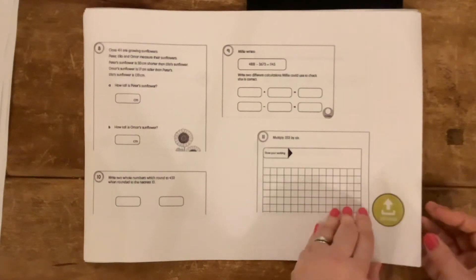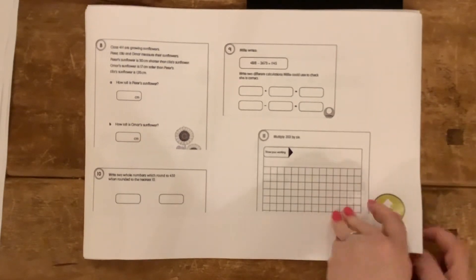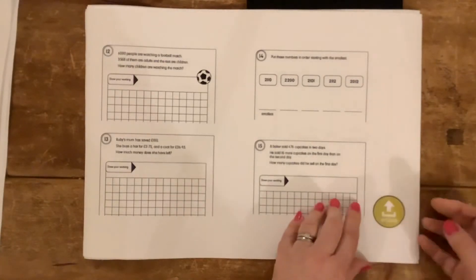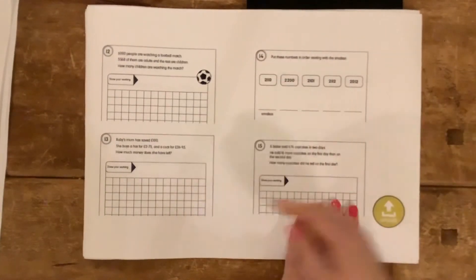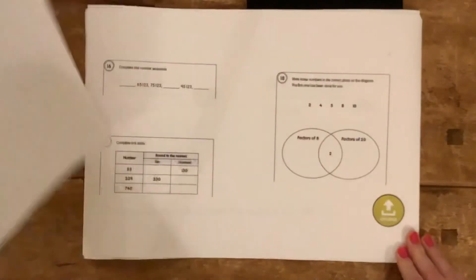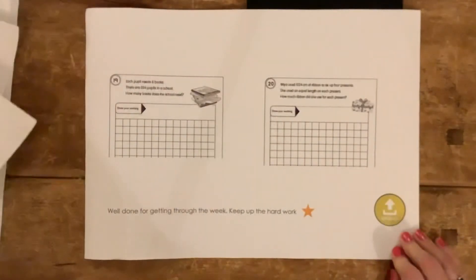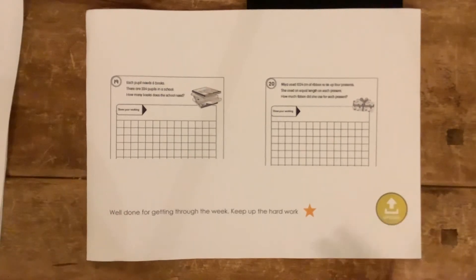There are some word problems; in particular read those more than once. Show your workings and if you need to use the space around about that's fine. And then once you're finished, if you can just ask a grown-up to upload these sheets onto Purple Mash.